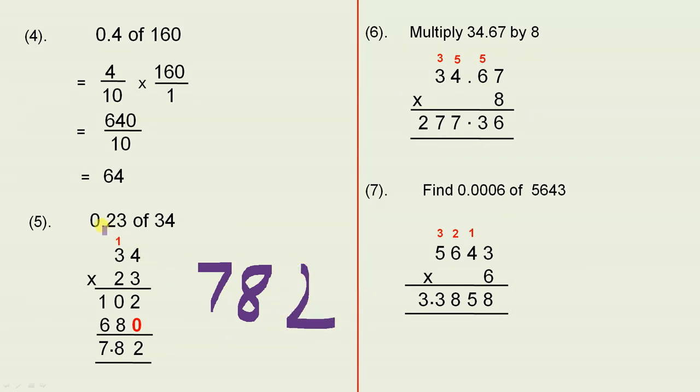In the original calculation here, or the question, there are two digits after the decimal point. So in the answer, we have two digits after the decimal point, 7.82.